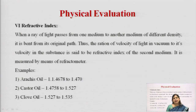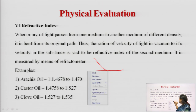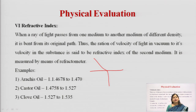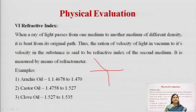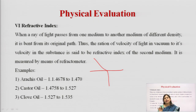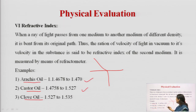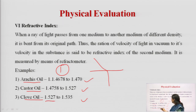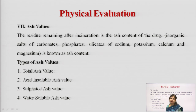The refractive index is generally for transparent or translucent substances. When a ray of light falls on such a substance it changes angle — the bending of the original path due to change in density or nature of the next material is refraction, and the particular angle by which refraction takes place is the refractive index. Oils like arachis oil, castor oil, and clove oil have specified refractive indices. For example, the refractive index of water is 1, while clove has a refractive index of 1.5 to 1.535, which can be used to identify the purity of clove.